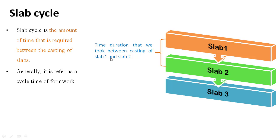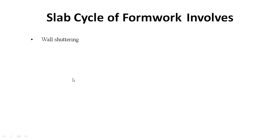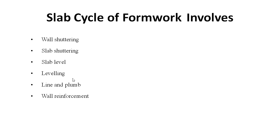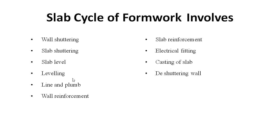Generally, it is referred to as the cycle time of formwork. Slab Cycle of Formwork involves wall shuttering, slab shuttering, slab levelling, line and plumb, wall reinforcement, slab reinforcement, electric fitting, casting of slab, and de-shuttering of formwork.